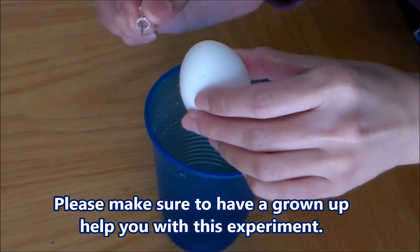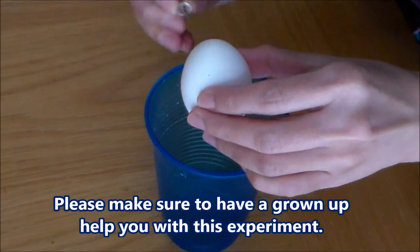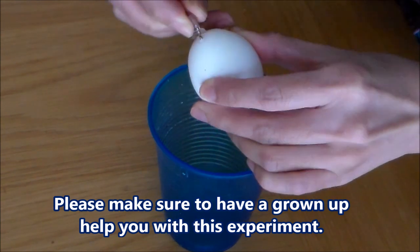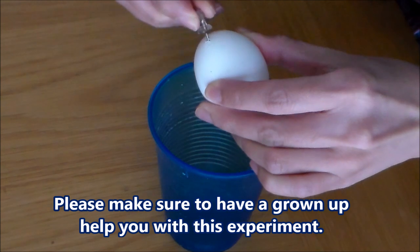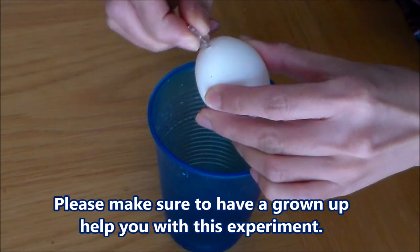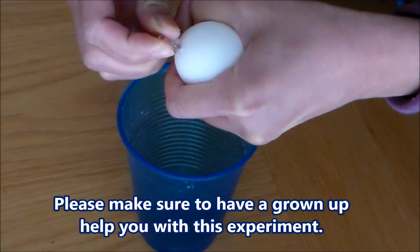To blow out an egg, you'll need a push pin or a tack. You're going to poke holes on the top and the bottom of the egg. You kind of want to work it in there so you can open up the membrane. Get another hole in there.